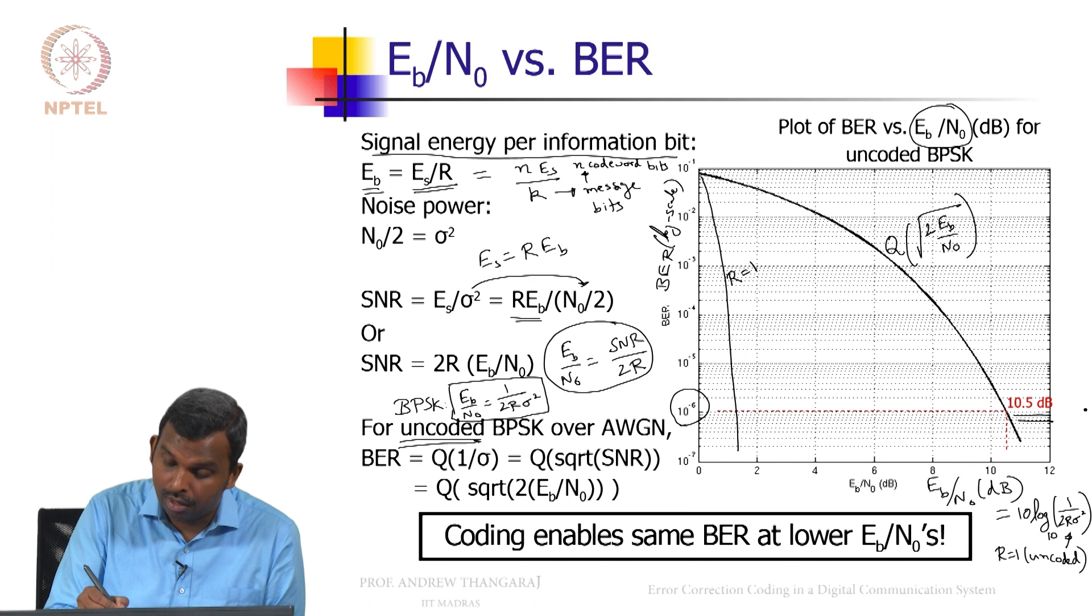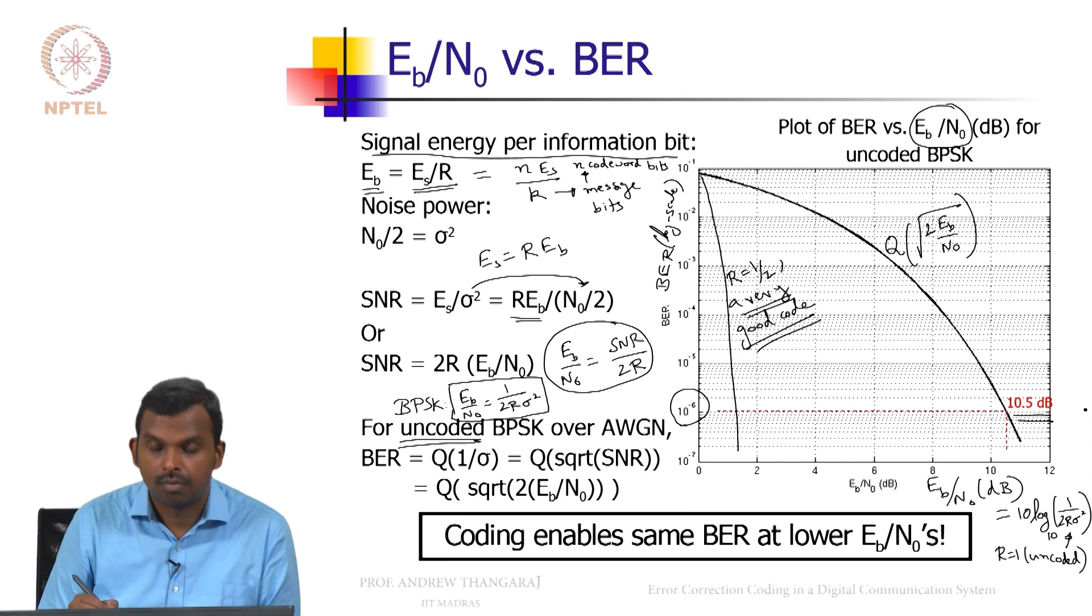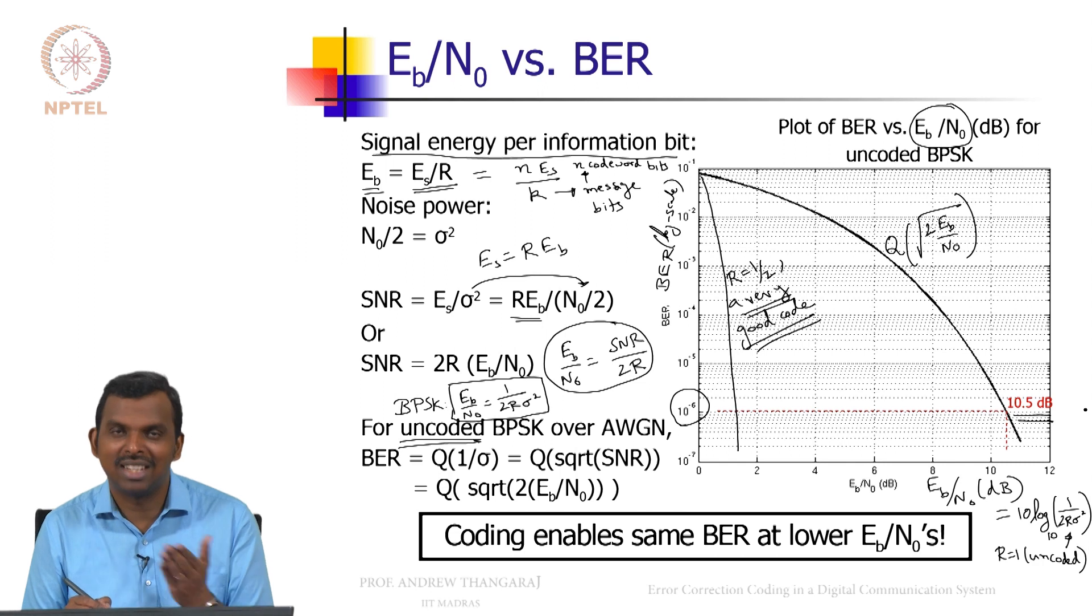So let us say R equals half, a very good code. What is this very good code? We will see later on in this class. The codes in the 5G standard are very good codes and they can give you a picture like this.